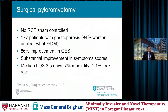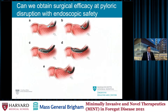What about surgical pyloromyotomy? This has been done for many years, and while there are no randomized controlled trials, one of the largest prospective studies included 177 patients with gastroparesis, showing 86% improvement in gastric emptying and sustained improvement in symptom score. However, the median length of stay was about four days, with 7% morbidity and about 1% leak rate — not terribly high, but probably not what we want for a benign condition like gastroparesis. The question is: can we obtain surgical efficacy at pyloric disruption with endoscopic safety?